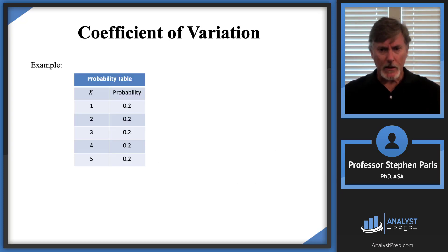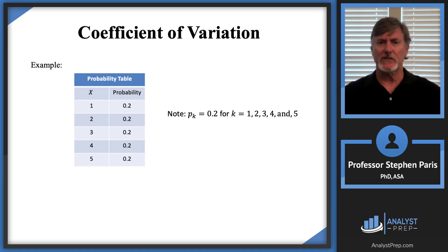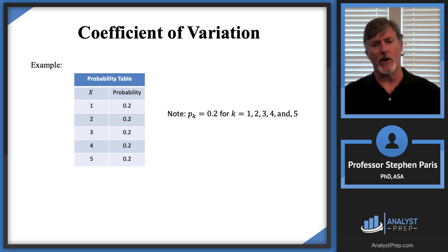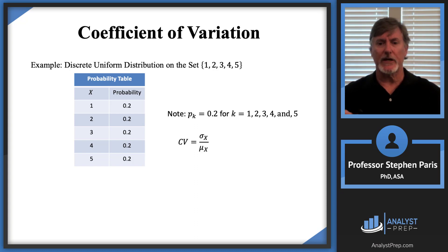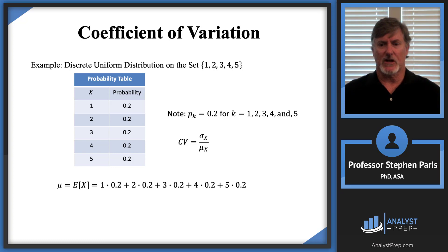Let's look at an example. In this example, all of the probabilities are 0.2. When all the probabilities are the same value, you have a uniform distribution — specifically, a discrete uniform distribution on the set {1, 2, 3, 4, 5}, because that's the support of the random variable. To calculate the coefficient of variation, I need first the mean, which is just the sum product. The mean is 3.